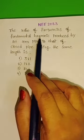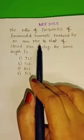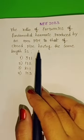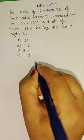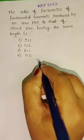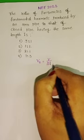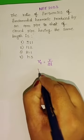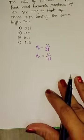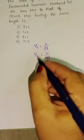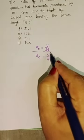The ratio of frequencies of fundamental harmonic produced by an open pipe to that of a closed pipe having the same length is: fundamental frequency produced by an open pipe is V/2L, and in a closed pipe it is V/4L. Take the ratio of open pipe to closed pipe — here length is the same.